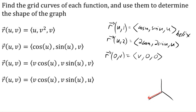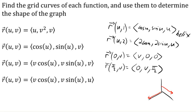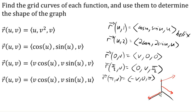At u equals pi/2: cosine is 0, sine is 1, giving (0, v, pi/2). The z value is constant at pi/2 and we're increasing in the y direction. At u equals pi: cosine is -1, giving (-v, 0, pi) — at a z value of pi, going in the negative x direction. So these lines rotate as u changes, while being parallel to the xy-plane, combined with the helixes of different radii as v changes.